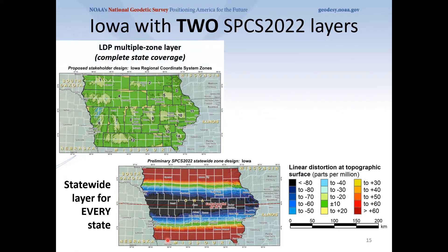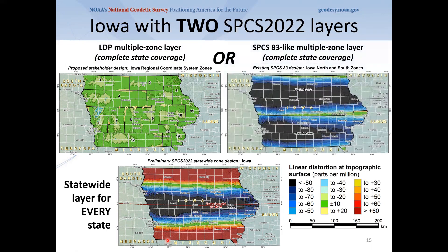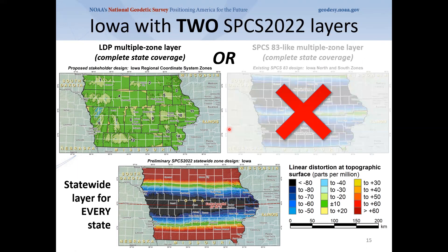States can have a statewide zone plus a multiple-zone layer covering the entire state, or they can have the statewide zone plus zones like the classic state plane zones. But they can't have both full-coverage multiple-zone layers — it's one or the other — because if you have both, the smaller zones probably wouldn't get used. So a decision needs to be made: you can't cover the entire state with two multiple zone layers.